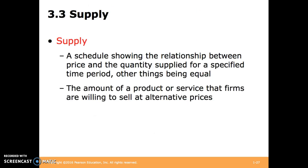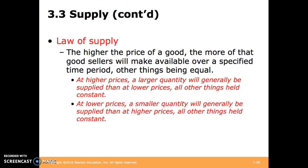Now we'll discuss supply. Supply is a schedule showing the relationship between price and the quantity supplied for a specified time period, other things being equal — the amount of a product or service that firms are willing to sell at alternative prices. The law of supply states that the higher the price of a good, the more sellers will make available over a specified time period, other things being equal. This results in a positive slope, which mirrors the slope of the demand curve.